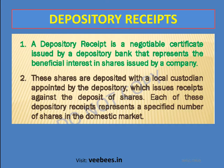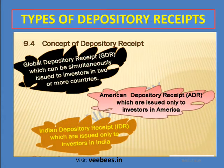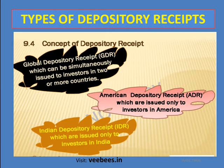There are different types of depository receipts. The first is the Global Depository Receipt or GDR, which can be simultaneously issued to investors in two or more countries. The second is the American Depository Receipt or ADR, which is issued only to investors in the American market. The third is the Indian Depository Receipt or IDR, which is issued only to investors in India.